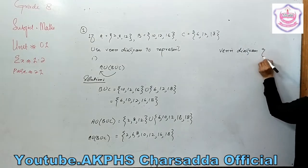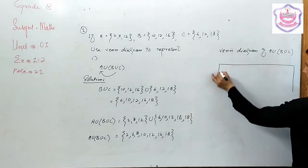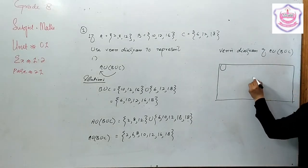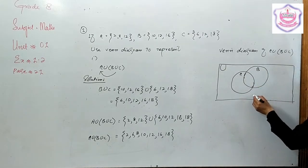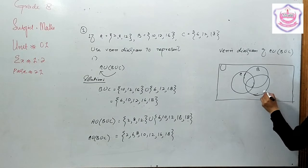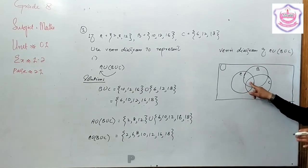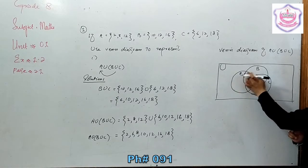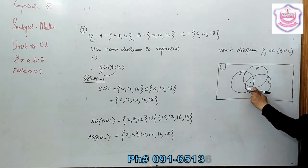To represent A union B union C with a Venn diagram: draw the universal set as a rectangle and place three circles inside it, representing set A, set B, and set C respectively. Each circle overlaps with the others to show common portions.